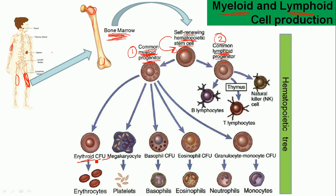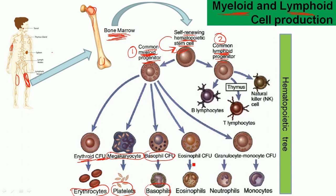It produces the erythroid CFU (colony forming unit), which produces erythrocytes or red blood cells. The second is megakaryocytes, which produce platelets. The third is the basophil CFU, which produces basophils in our blood.